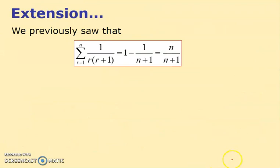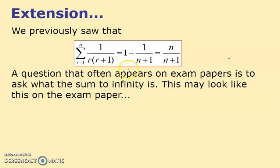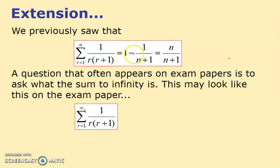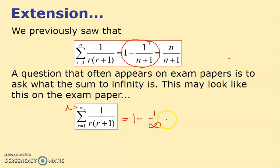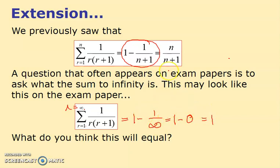As an extension, we've seen this sum before. Sometimes you get asked: rather than summing from 1 to n, what happens if it goes from 1 to infinity? The unsimplified form is probably best here, because if n is infinity — a really big number — then 1 over a really big number is basically nothing, so the answer is 1. You can think of it as: 1 divided by infinity over infinity plus 1 is still 1.